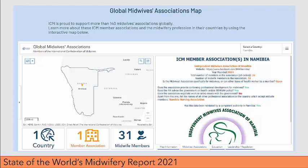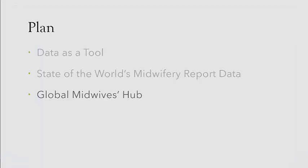In the tabs on the lower right-hand corner, you can browse the four core elements of the ICM Professional Framework. Also, you can see for each country if the data has been validated by a competent authority. So now that we've talked about the potential of open data, let's talk about the Global Midwives Hub.